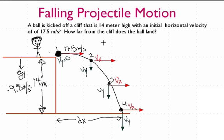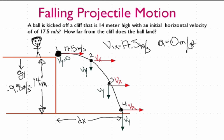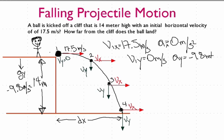Let's solve this mathematically by writing down what we know. The initial velocity in the x direction is 17.5 meters per second, so the acceleration in the x direction is 0. In the y direction, the initial velocity is 0 meters per second, and the acceleration in the y direction is minus 9.8 meters per second squared.